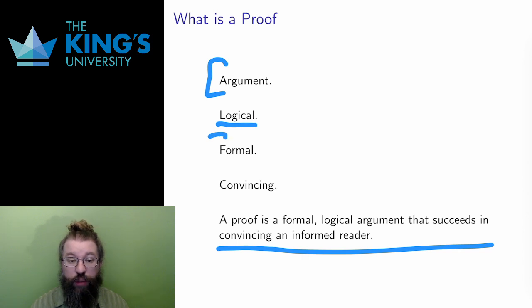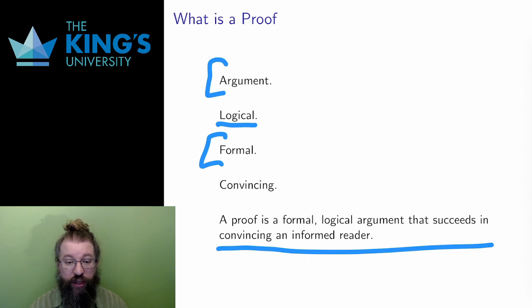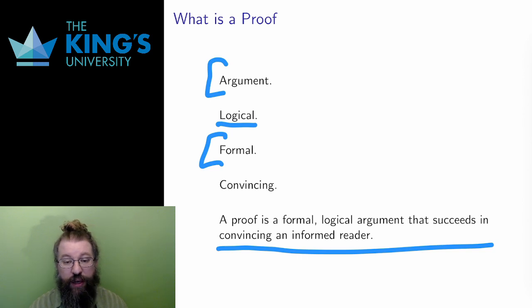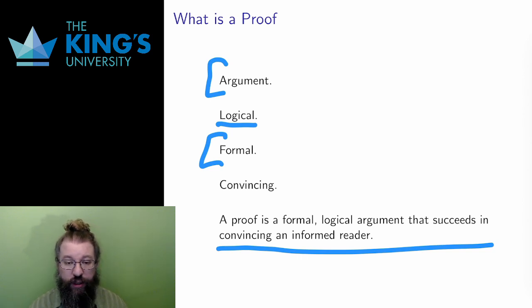Third, a proof is formal. Mathematics has a formal notation, formal definitions, and rules for manipulating expressions. A proof follows these formalities. It can't treat mathematical ideas and definitions loosely or casually — it has to follow the rules and strict conventions of mathematics.